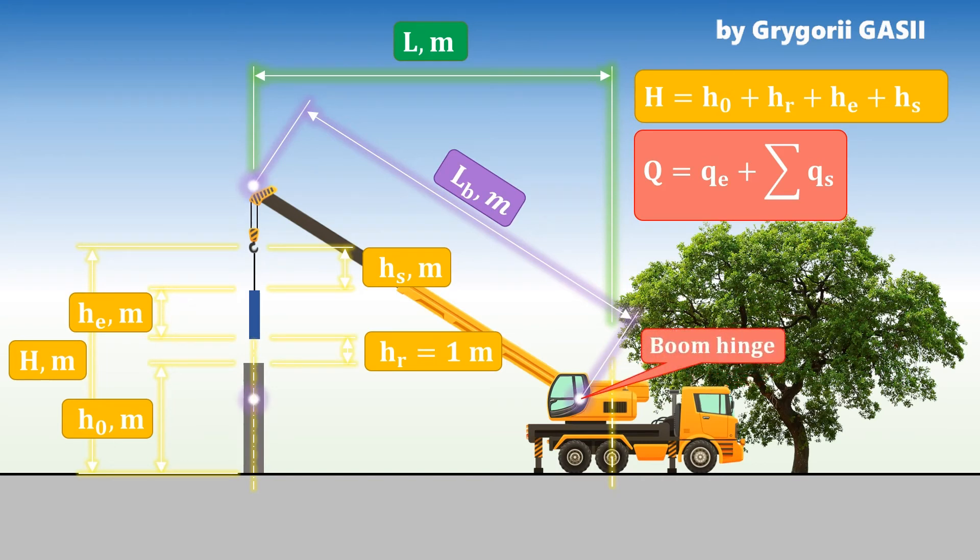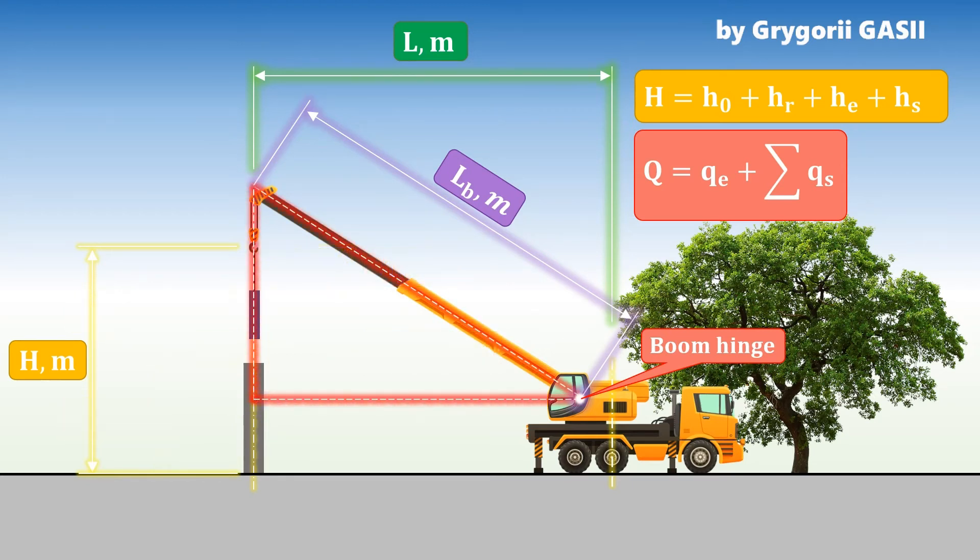To determine it, you can use a graphical method or an analytical one, for example, the Pythagorean theorem. In any case, you need to know such parameters as the distance from the axis of rotation to the hinge of the boom and the level of the boom hinge.